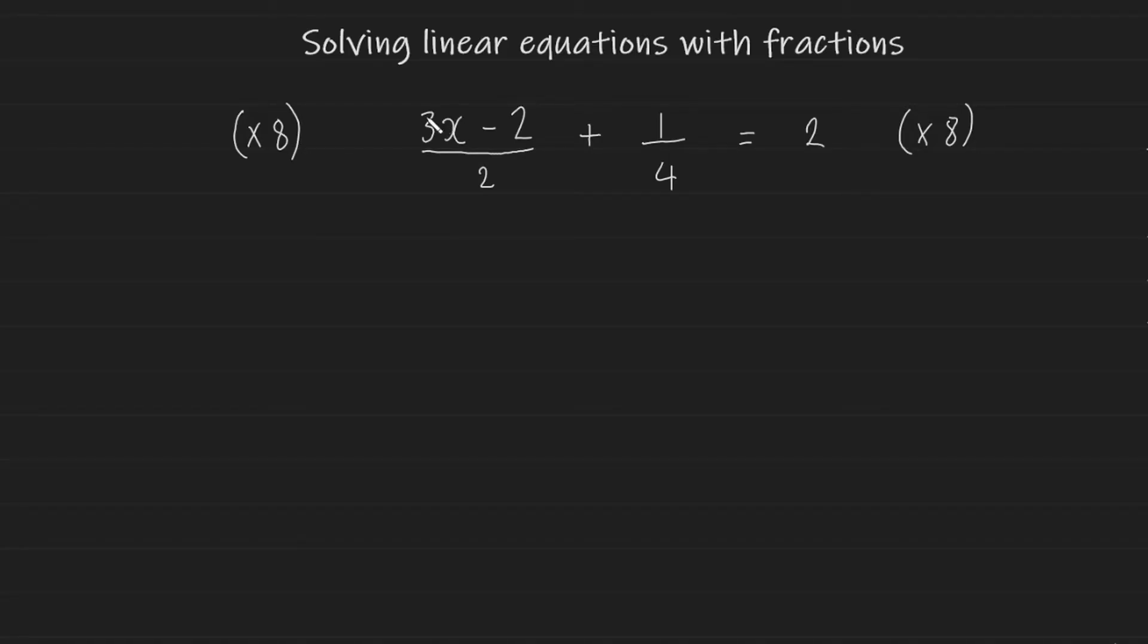8 multiplied onto 3x and 8 multiplied onto 2. So because there's an operation between the expression, the multiplication distributes into both terms. So 3x multiplied by 8 gives us 24x. Minus 2 multiplied by 8 gives us 16. And this is all over 2. Plus 1 multiplied by 8 is going to be 8. And this is going to be over 4. So if you've forgotten, when you're multiplying whole numbers onto fractions, you just multiply the number onto the numerator. Which is why the denominators are staying the same after the multiplication. And this is equal to 2 multiplied by 8, which is 16.